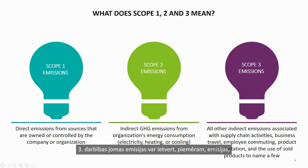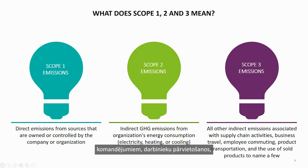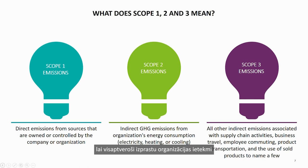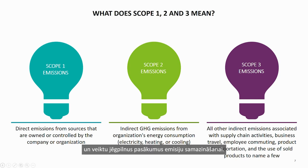Scope 3 emissions can include emissions associated with supply chain activities, business travel, employee commuting, product transportation, and the use of sold products, just to name a few. They represent a significant portion of a company's overall carbon footprint. Measuring and managing them is important for a comprehensive understanding of an organization's environmental impact and for taking meaningful steps to reduce emissions.